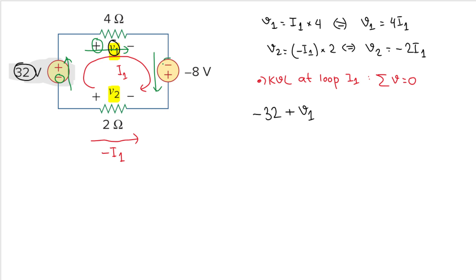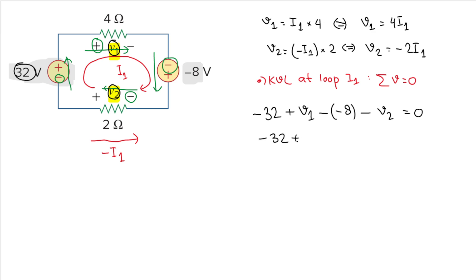The current then enters the negative terminal of the next element, so our sign is negative, and the value there is minus 8 — we have to be very careful about the sign. Then the current enters the negative terminal of the v2 element, giving minus v2. Setting the sum equal to zero: minus 32 plus v1 minus minus 8 minus v2 equals zero.